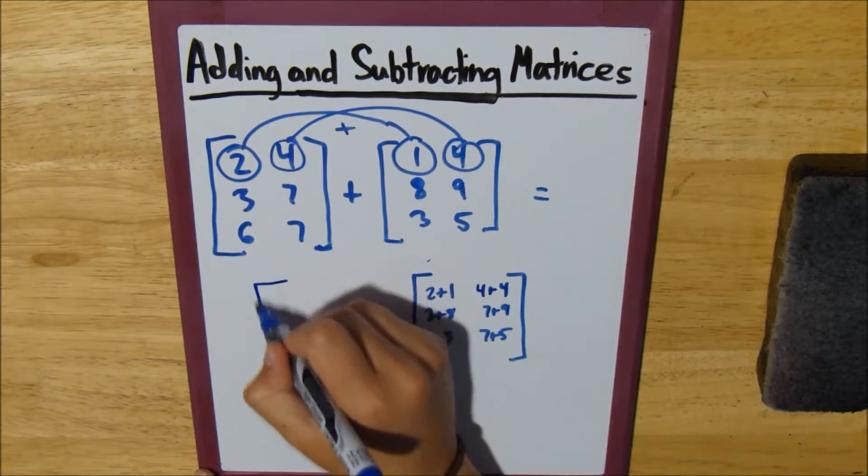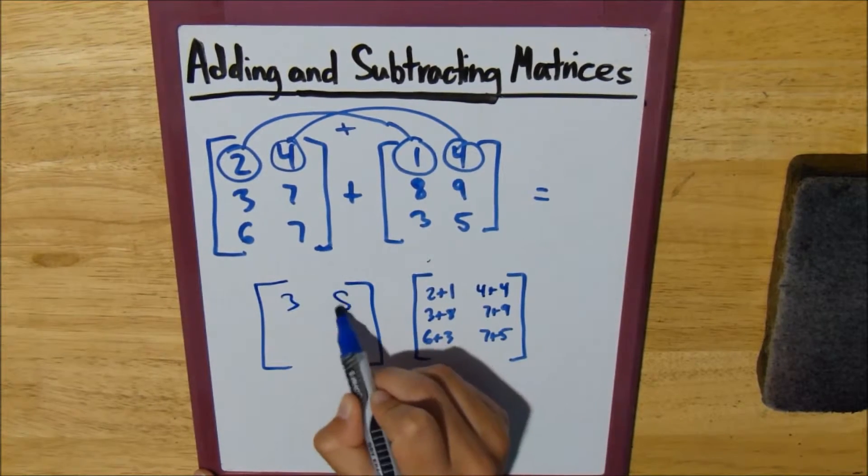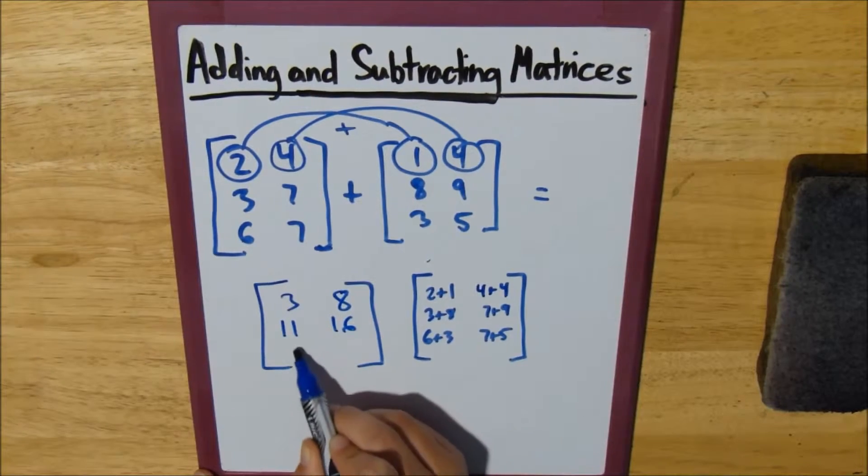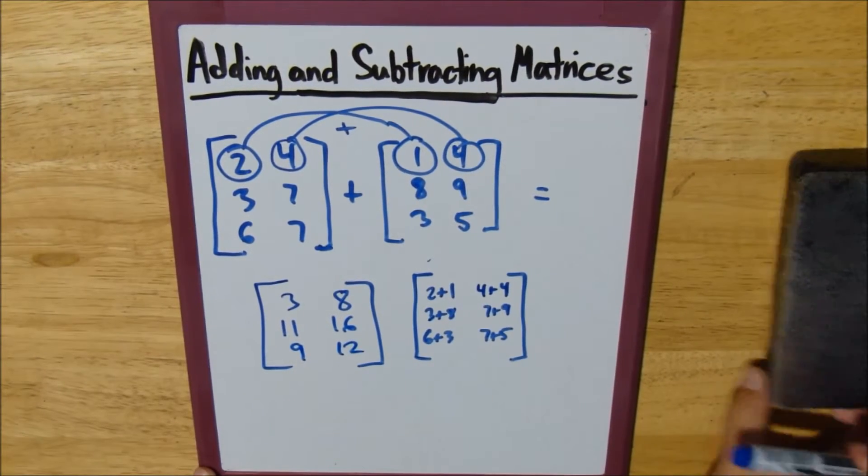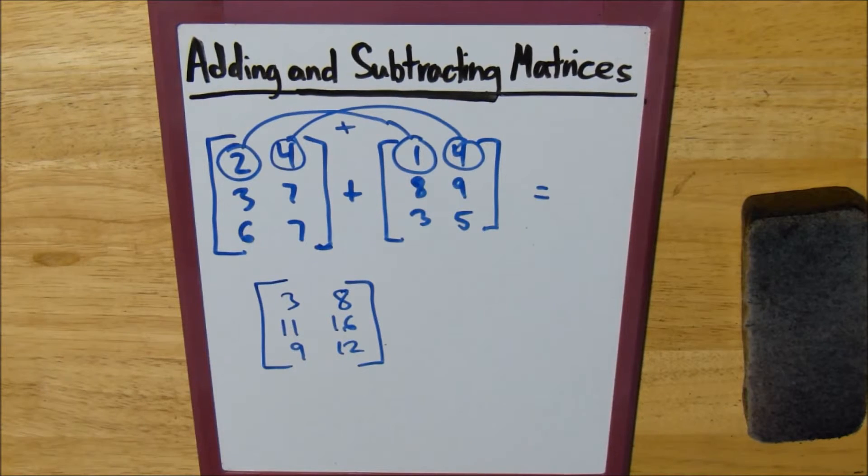So I'd rewrite it: 2 plus 1 is 3, 4 plus 4 is 8, 11, 16, 9, and 12. Alright, and that is our resulting matrix.